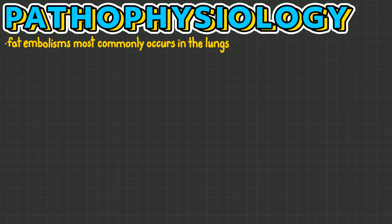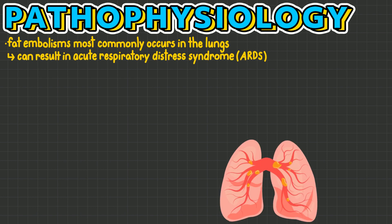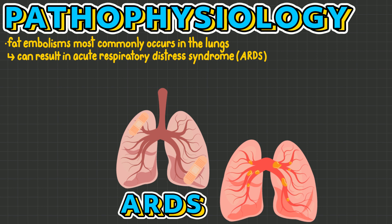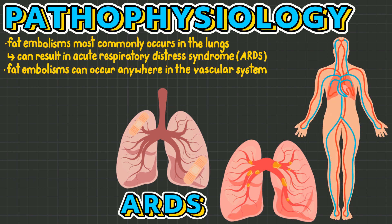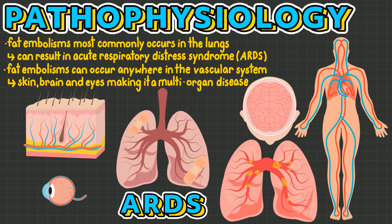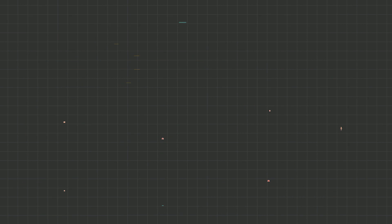Fat embolisms most commonly occur in the lungs and can result in acute respiratory distress syndrome, also known as ARDS. However, a fat embolism can occur anywhere in the vascular system, such as the skin, brain, and eyes, making it a multi-organ disease.